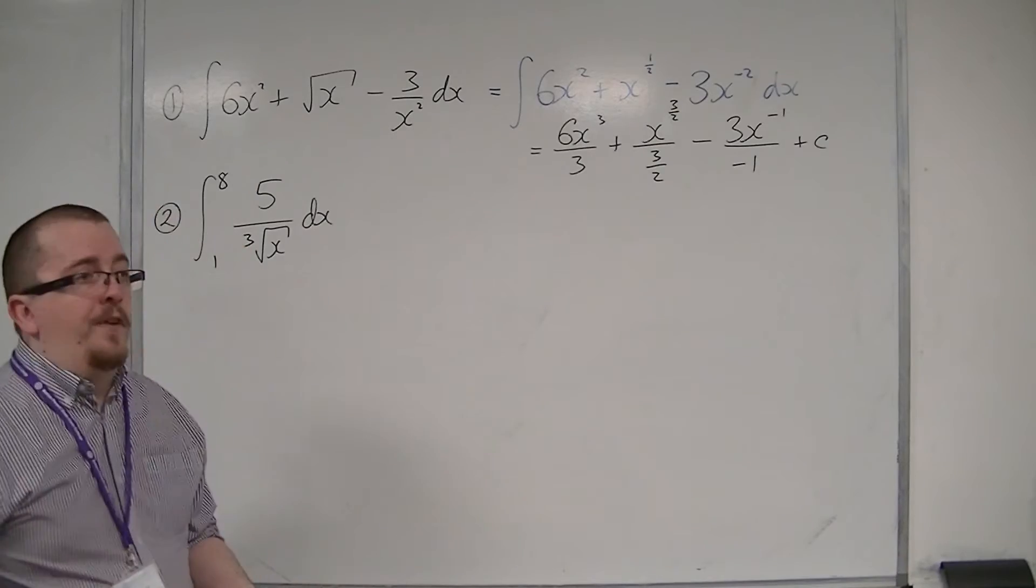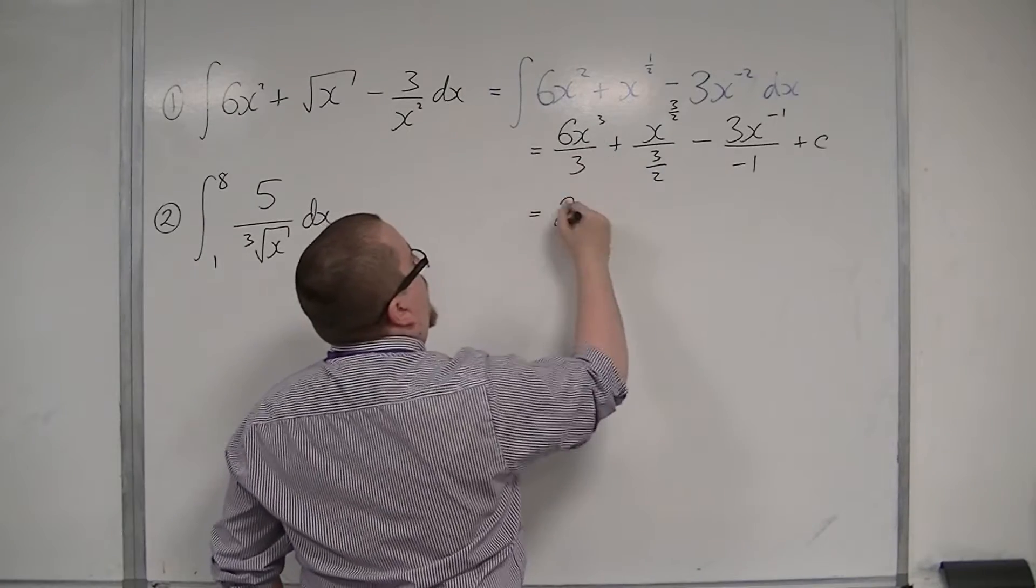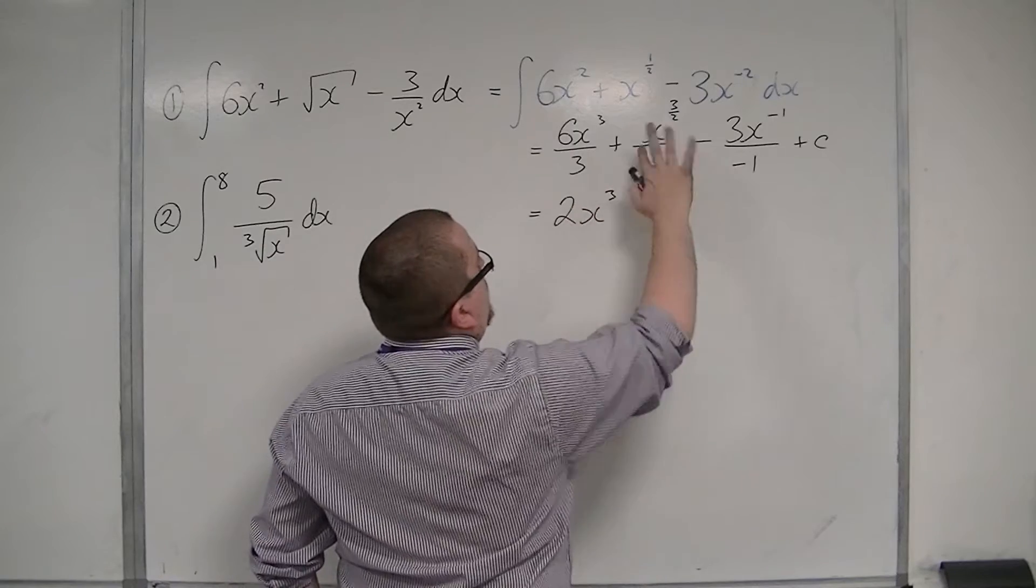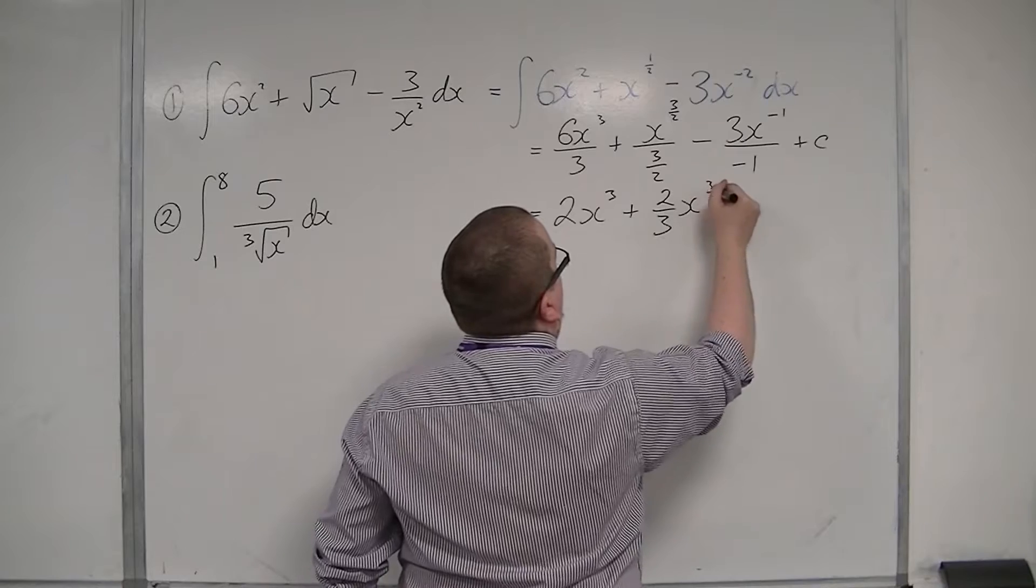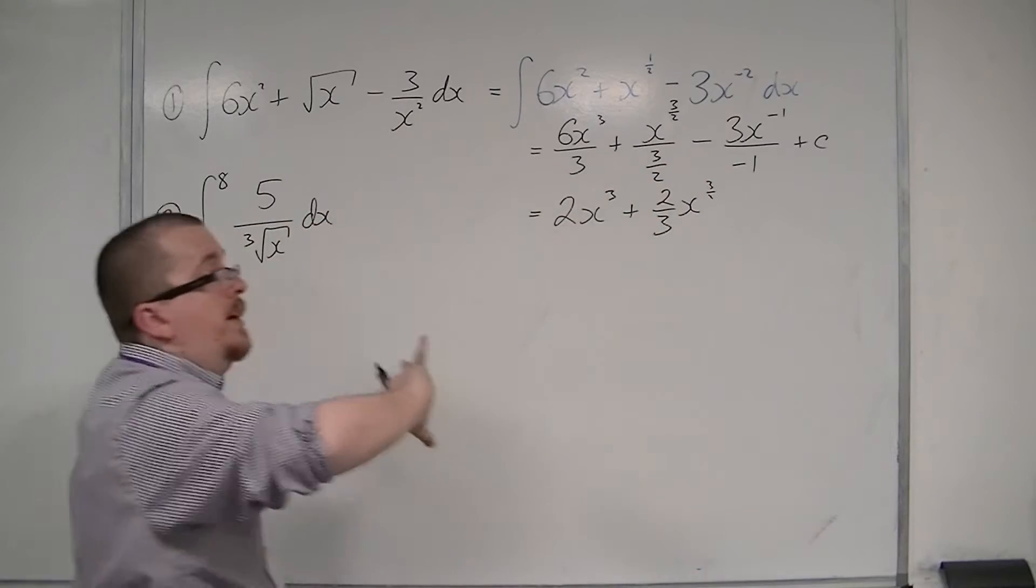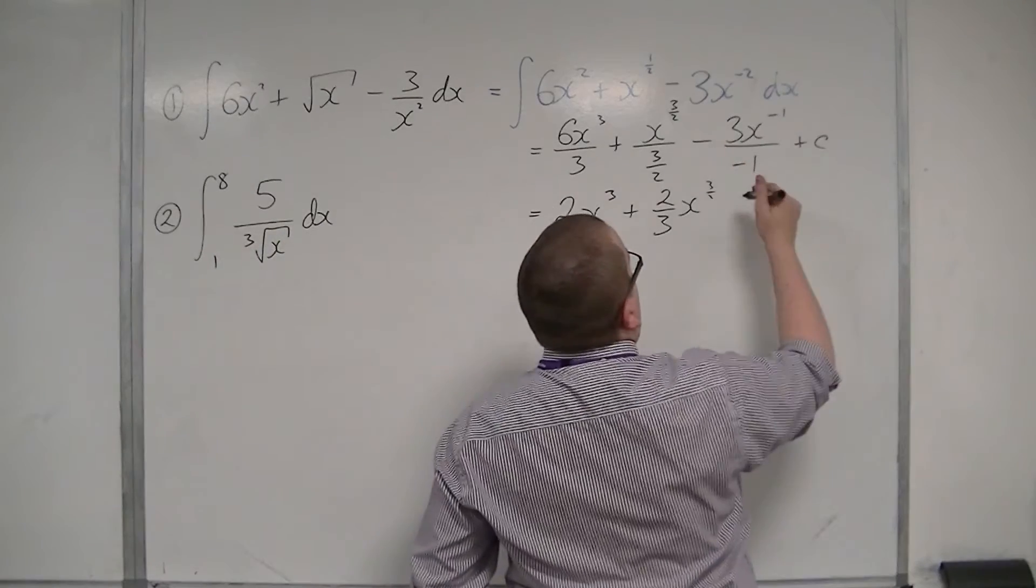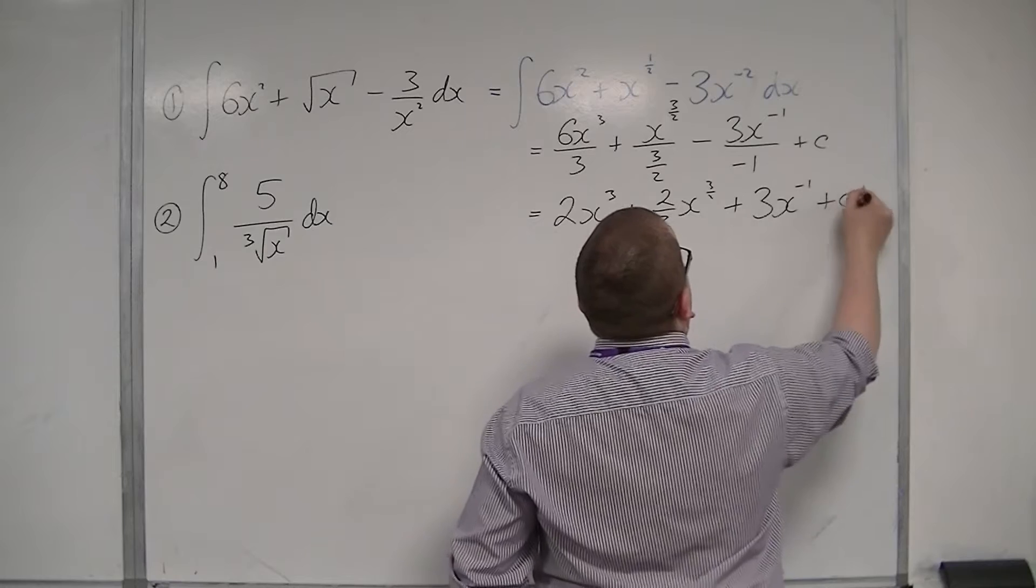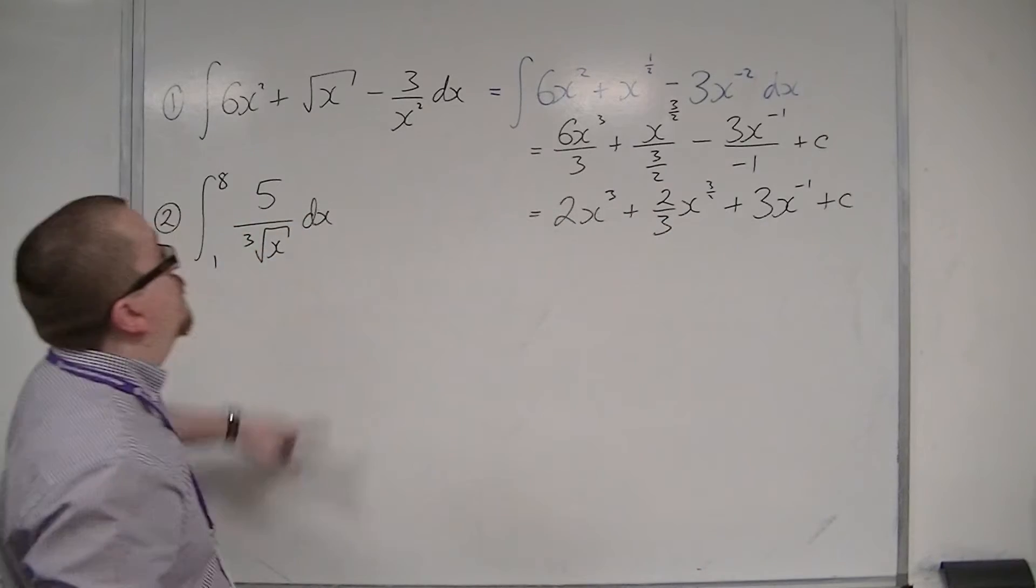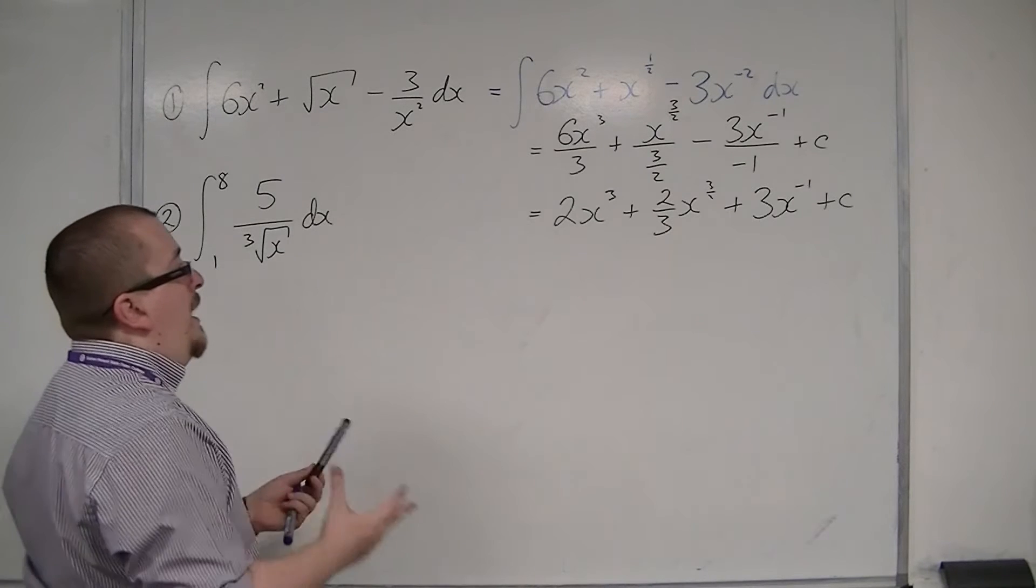Now I need to simplify this because at the moment it looks absolutely horrible. So I would have 2x cubed there. That would be 2 thirds x to the 3 halves, because dividing by 3 halves is the same as multiplying by 2 thirds. And dividing this through by minus 1 means I've got plus 3x to the minus 1 now. And that is the integral of the original function.